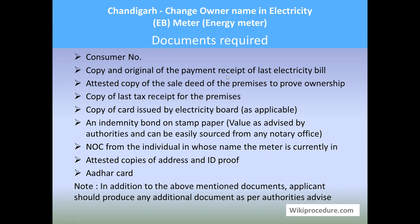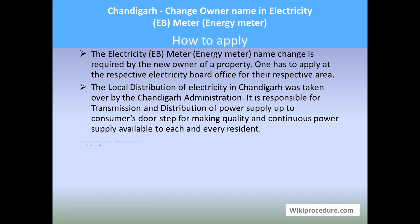Documents required: consumer number, copy and original of the payment receipt of the last electricity bill, attested copy of the sale deed of the premises to prove ownership, copy of the last tax receipt for the premises, copy of card issued by the electricity board as applicable, an indemnity bond on stamp paper of the value as advised by the authorities (the notary office will be helpful in sourcing this), and an attested copy of address and ID proof from the individual in whose name the meter is currently registered. The applicant may also be asked to provide additional information or documents as per the authorities' requirements.